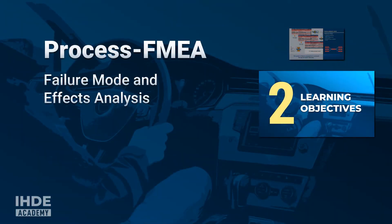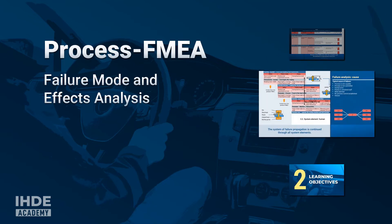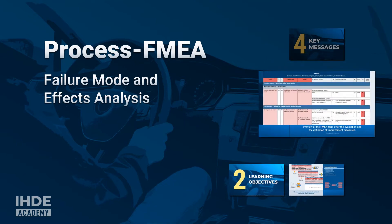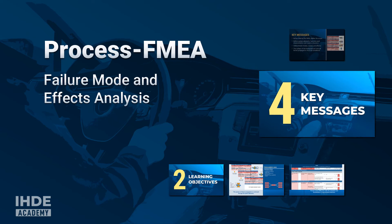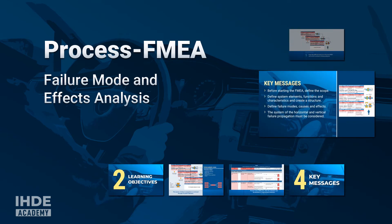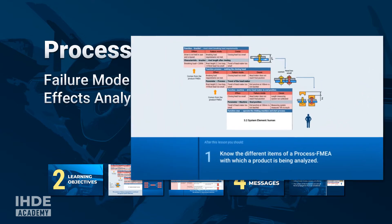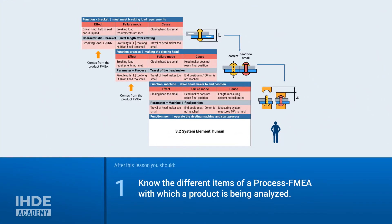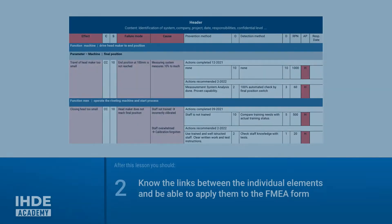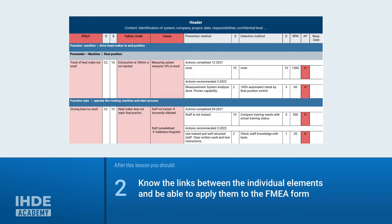This lesson is about understanding the system and the structure of a process FMEA. It has two learning objectives: at the end, you should know the different items of an FMEA with which a process is being analyzed, and you should know how these elements relate to each other in the FMEA form.